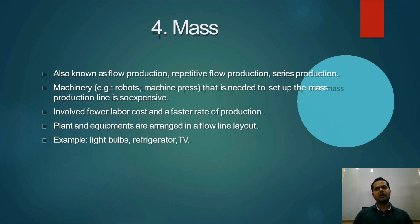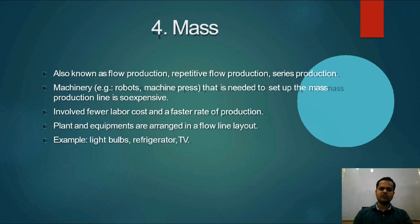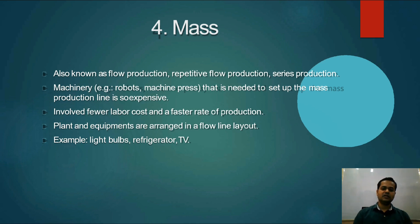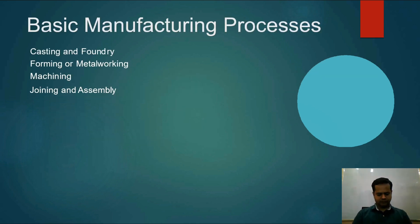Mass production means one type of product is continuously produced — that means production volume is very high. This is why labor cost is less in mass production. In the other types of manufacturing units, labor cost is more. But in mass production, labor cost is less — that is its advantage.